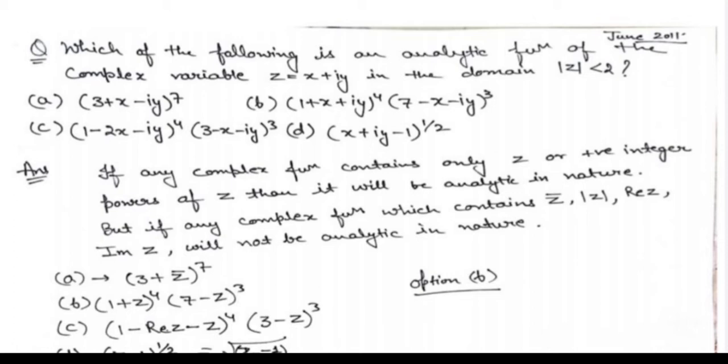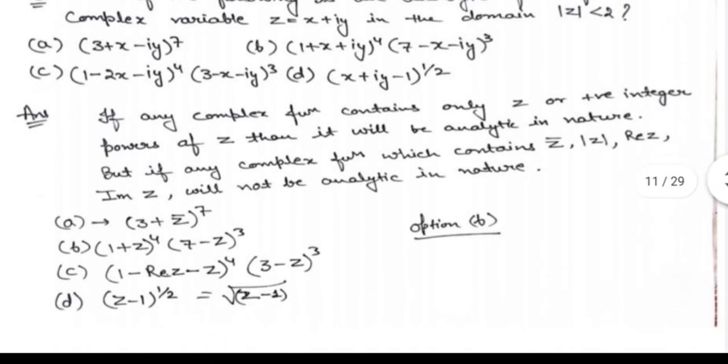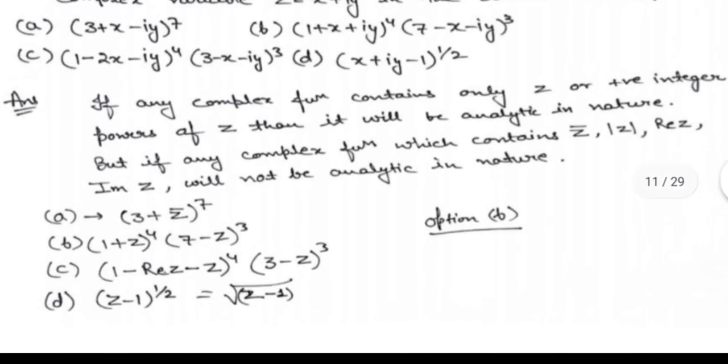In option A, we can write (x − iota y)^7 as (z-bar)^7, where z-bar is the complex conjugate of z. Since z-bar is present, this function is not analytic.